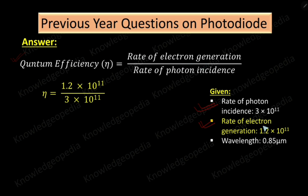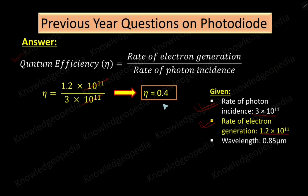Rate of electron generation is 1.2×10¹¹ and rate of photon incidence is 3×10¹¹. We can cancel 10¹¹ from both numerator and denominator, so eta equals 1.2 divided by 3, which gives eta = 0.4. So the quantum efficiency is 0.4.